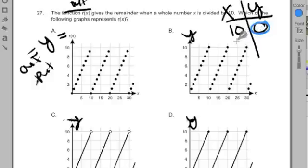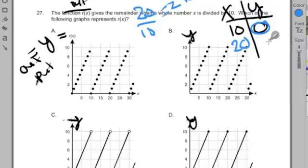What happens if I plop in 20? 20 divided by 10, 20 divided by 10 is equal to 2, and it has a remainder of 0. So again, my remainder is 0. So I should be looking for the graph where when I put in 10, the output is 0. When I put in 20, the output is 0. Great.